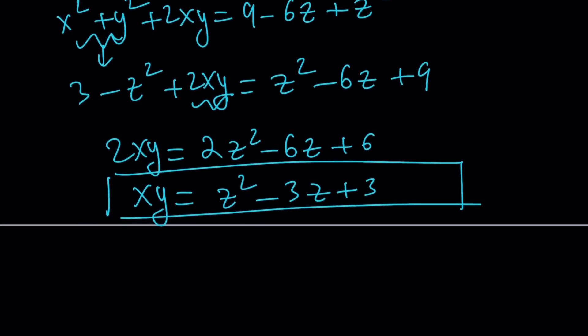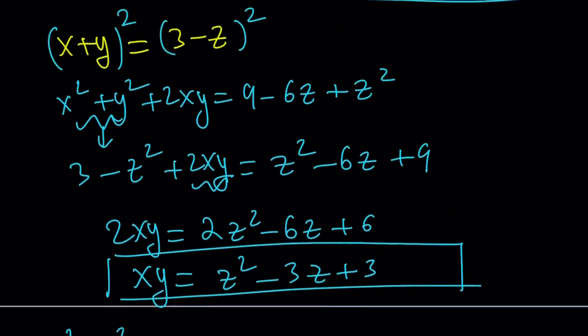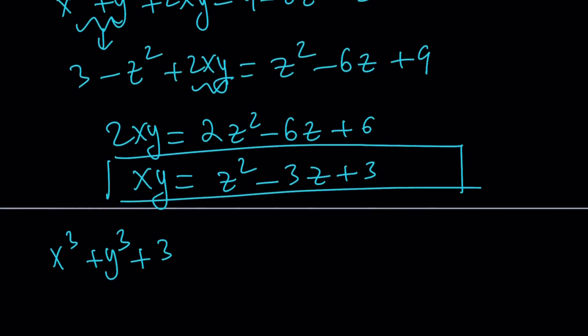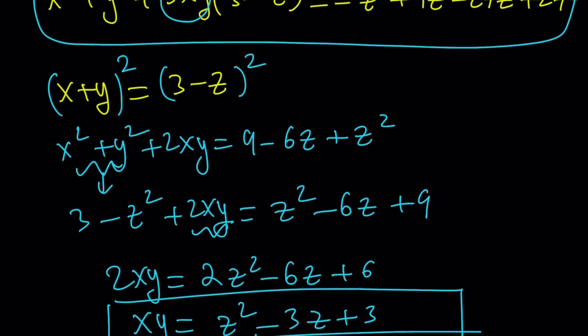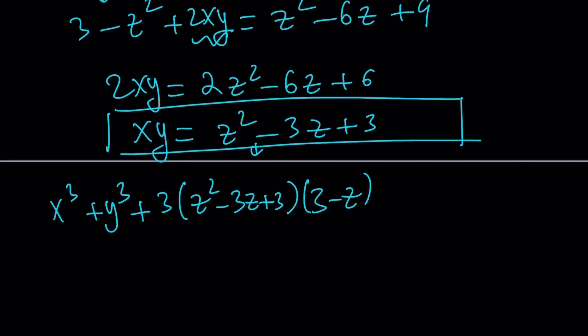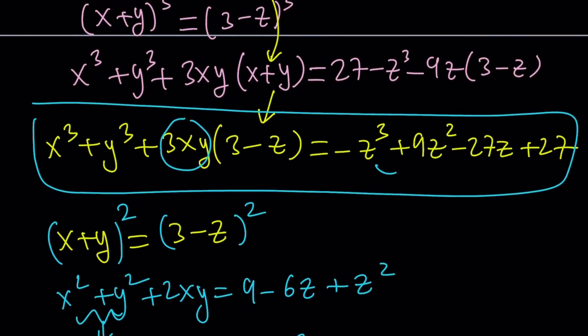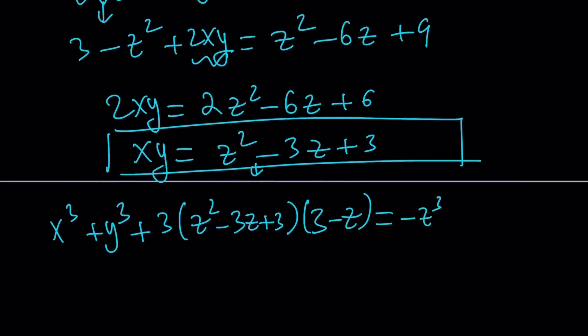Here's what we have: x cubed plus y cubed plus 3 times xy, and xy is going to be replaced with z squared minus 3z plus 3, times x plus y, which is 3 minus z. This equals negative z cubed plus 9z squared minus 27z plus 27.